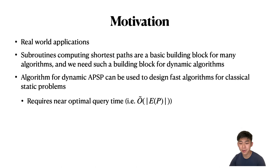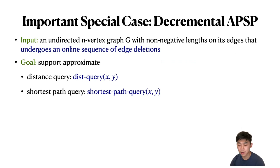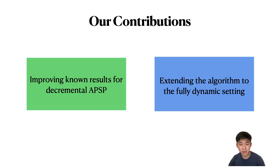One really important special case of dynamic APSP is decremental APSP. The only difference from the fully dynamic version is that the graph only undergoes an online sequence of edge deletions. The goal is the same: to support approximate shortest path queries and approximate distance queries. Our contributions are: first, we improve known results for decremental APSP; and second, we extend the algorithm to the fully dynamic setting.